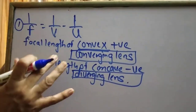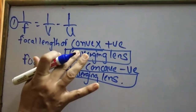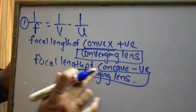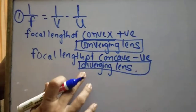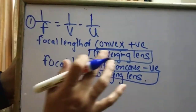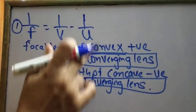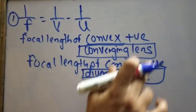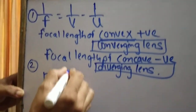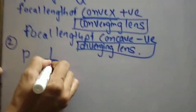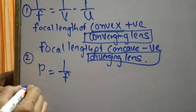We have to remember this lens formula. In the lens formula, convex is always positive — that is converging. Second formula: power of lens P is equal to 1 upon f, where f is focal length.